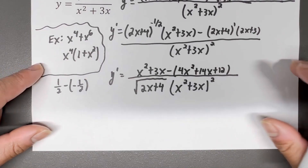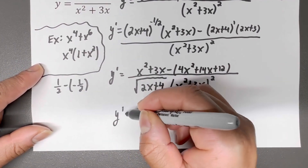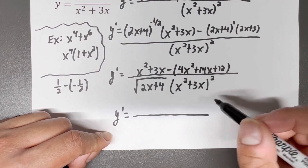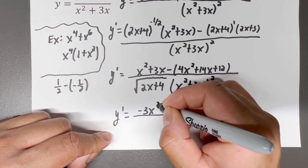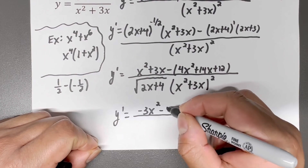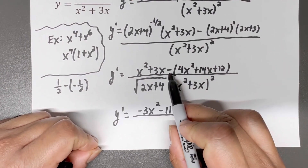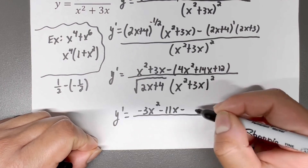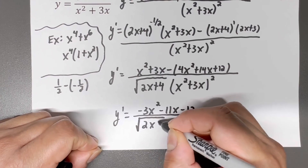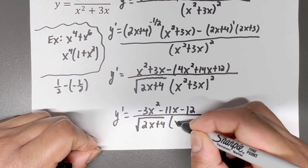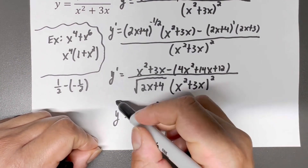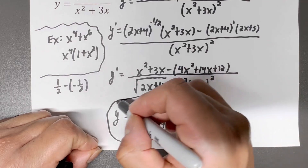Now all we have to do is a little simplifying and we have the final answer. So y prime is equal to: I have x squared minus 4x squared — that gives me negative 3x squared. Then I have 3x minus 14x — that gives me negative 11x. And then negative times positive gives me negative 12. At the bottom I just have 2x plus 4 times x squared plus 3x raised to the quantity squared. And we have the derivative to this problem.